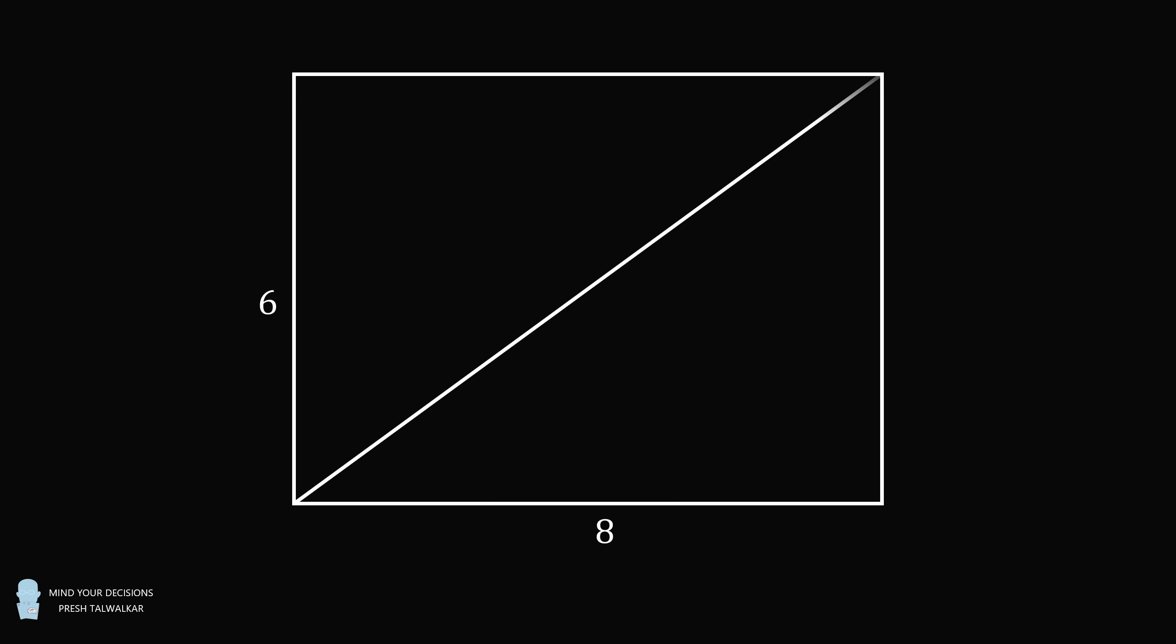Construct a diagonal of the rectangle, dividing the rectangle into two triangles. Inscribe circle X in one triangle and circle Y in the other triangle.